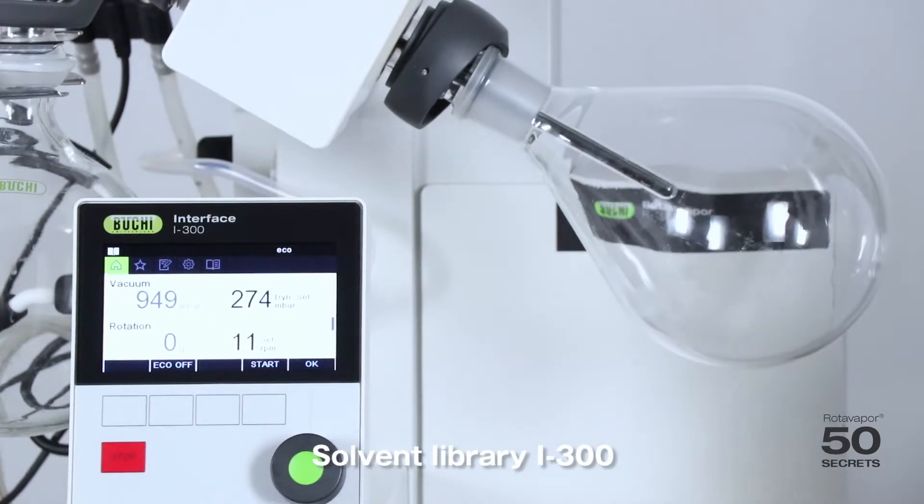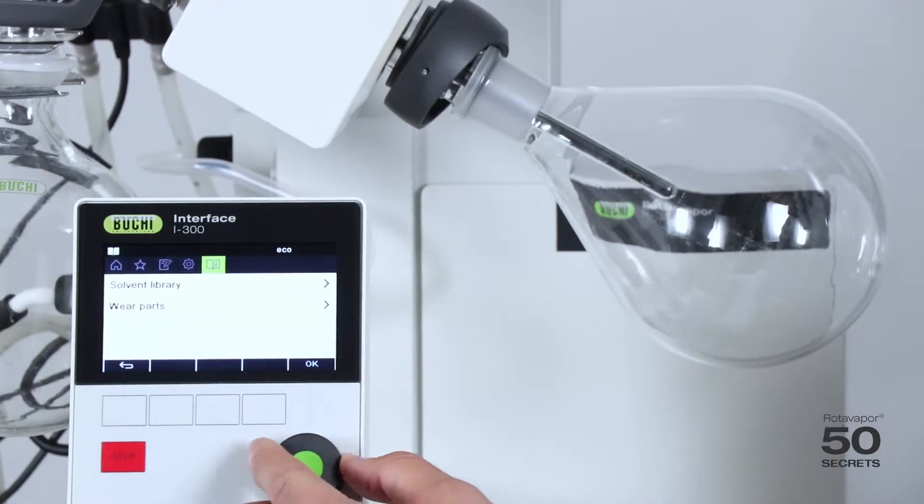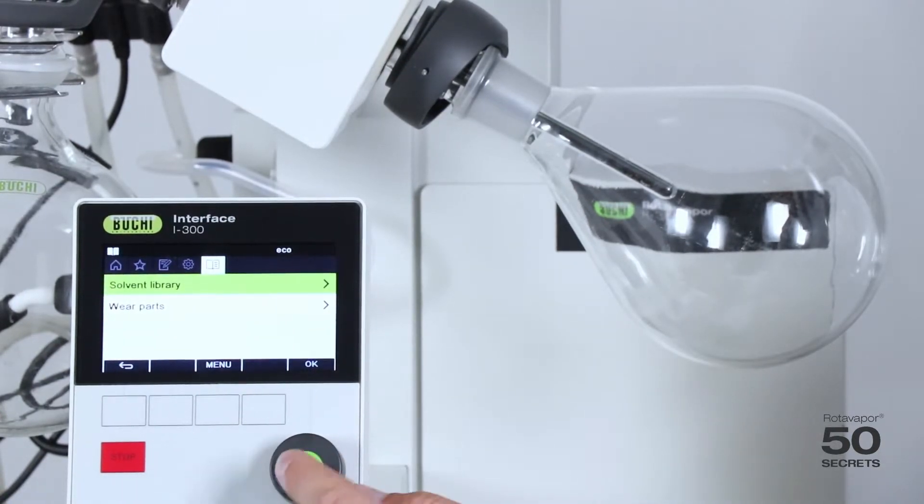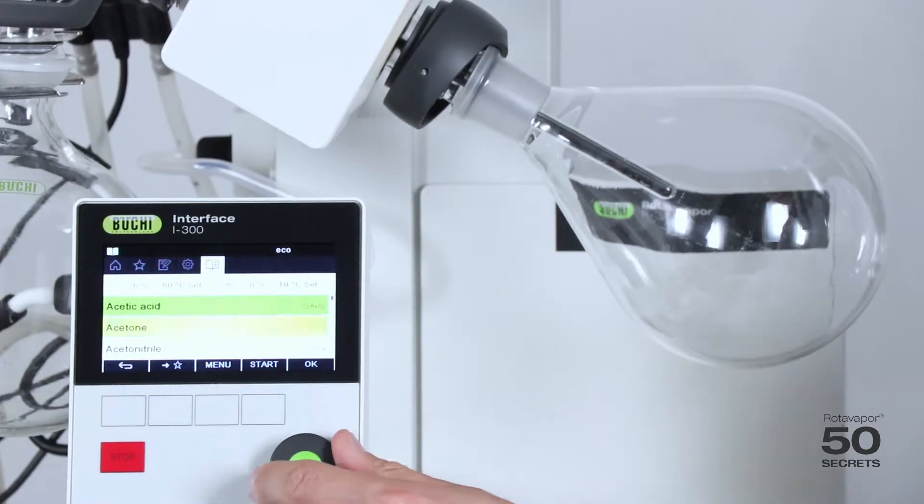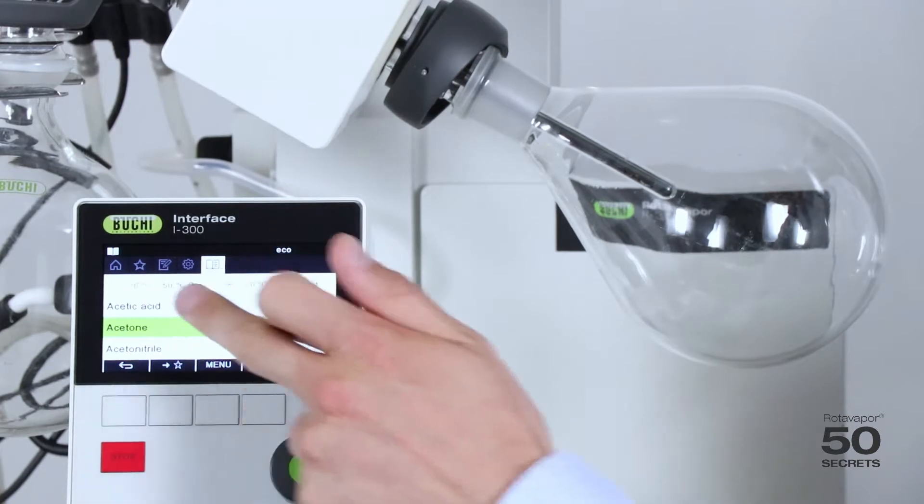Let's talk about the solvent library on the i300. We can simply go into the menu and just scroll to the same library icon. Go into the solvent library and in here I find exactly the same list. I can use exactly the same functions.